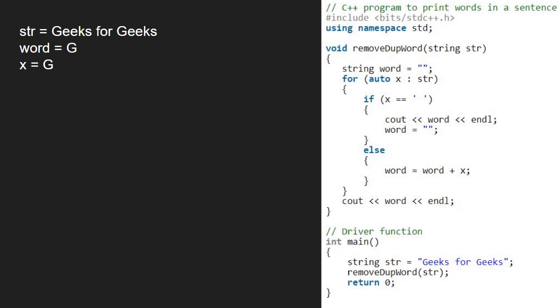We do the same till the first space is encountered. eeks is added to word one by one. Now, we encountered the first space after geeks. The if condition gets satisfied and we print word that is geeks. Then, we set word to null.